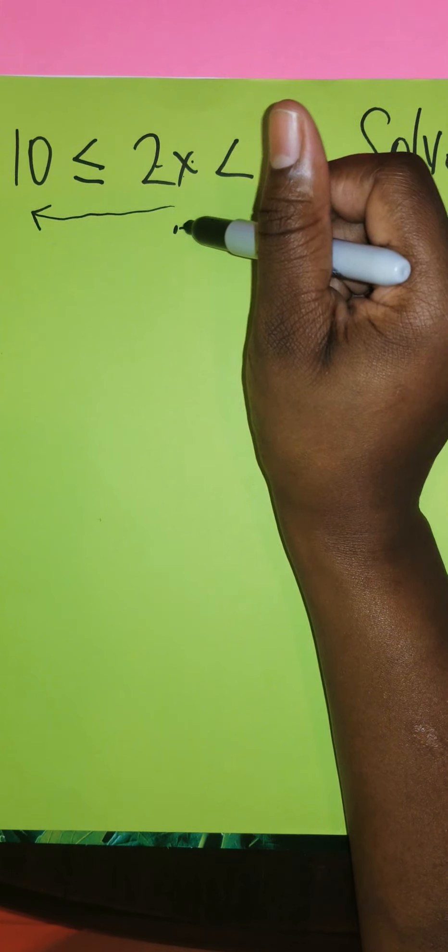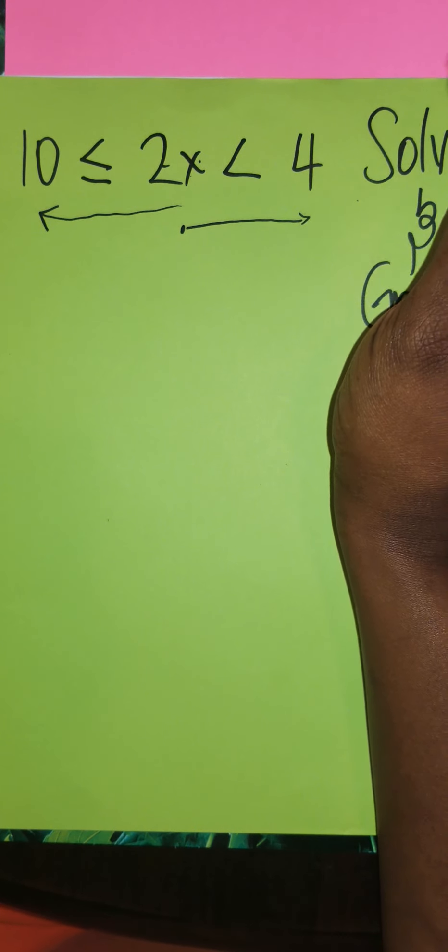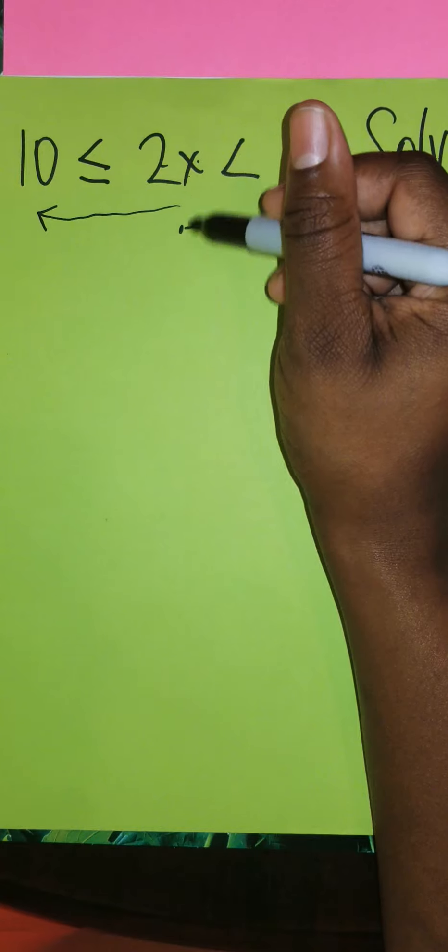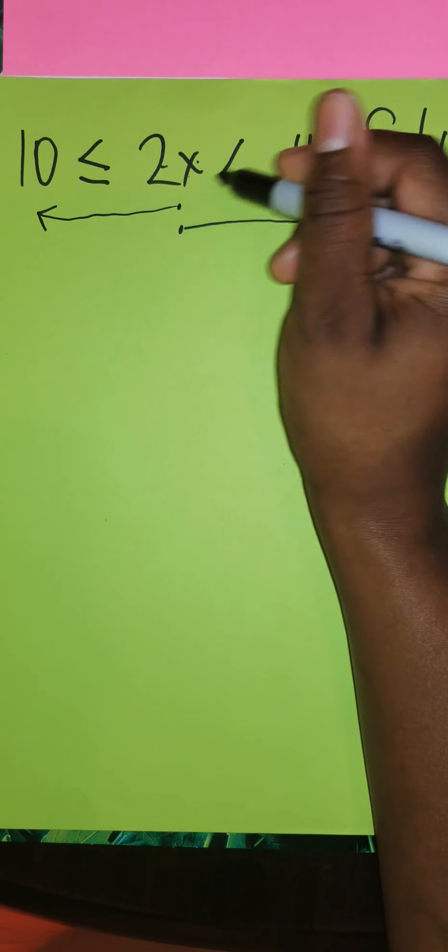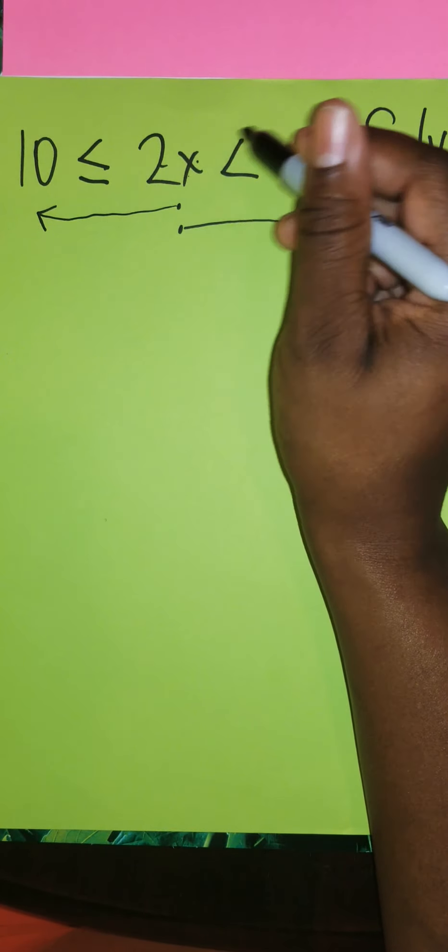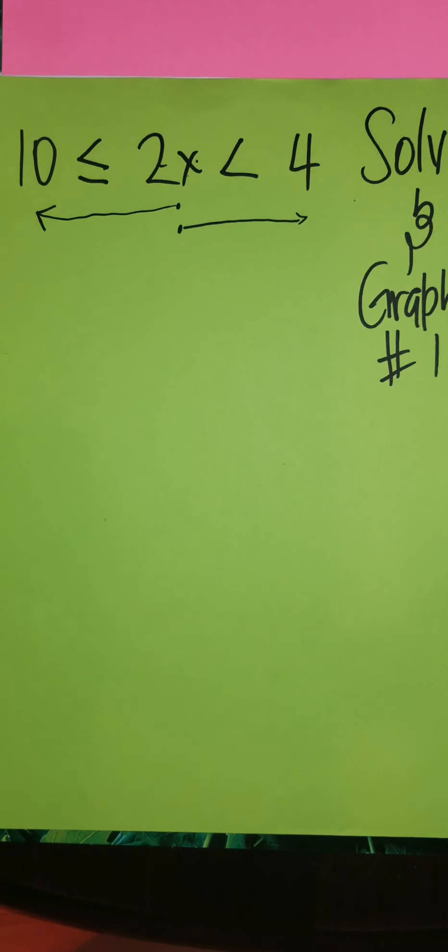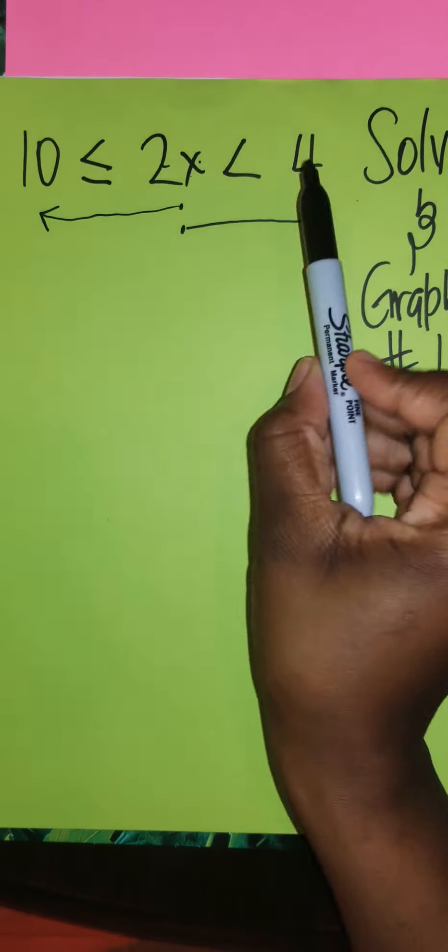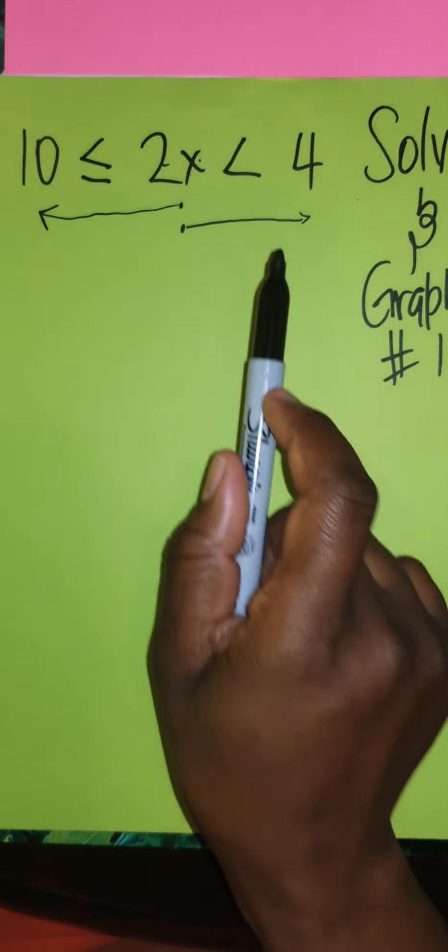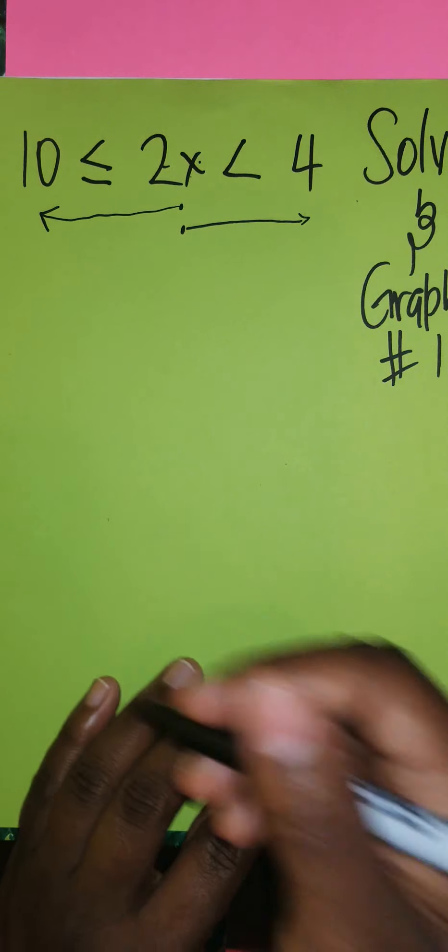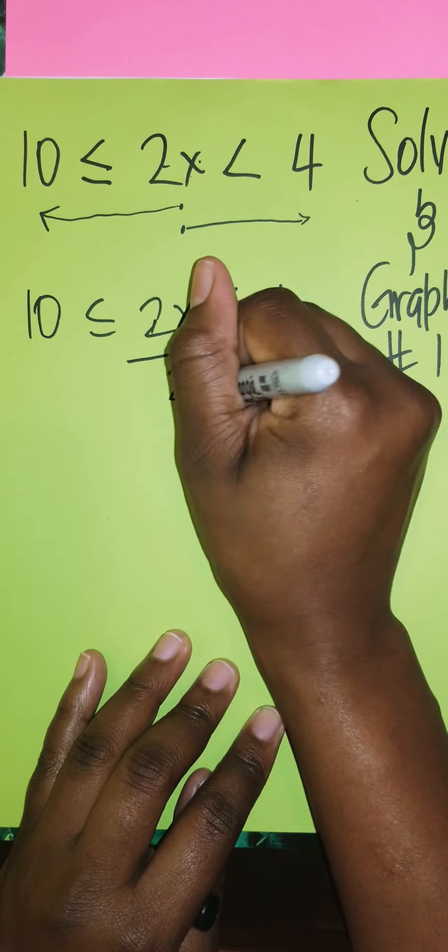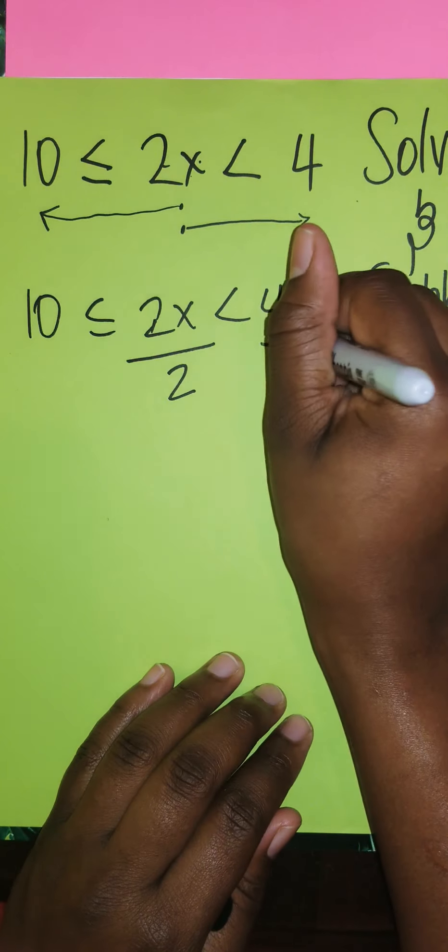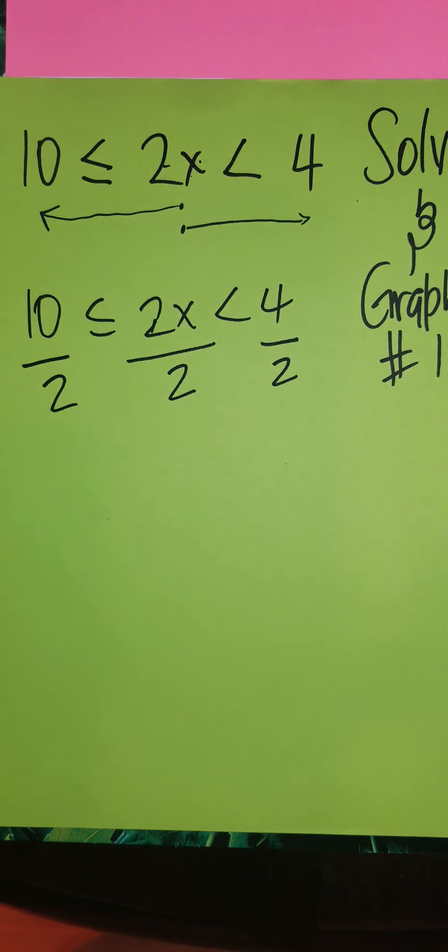In this region, if you have to solve, you basically want x to be by itself like normal equations. What we do is simplify by solving. Here we have 2x, so to get x by itself we have to divide by 2. We normally divide by 2 on both sides, but since in this region we have a double side with an inequality on each side, we're going to have to divide by 2 throughout.